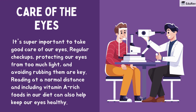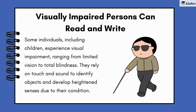As you can see, we can have serious issues with our eyes, so it's super important to take good care of them. Regular checkups, protecting our eyes from too much light, and avoiding rubbing them are key. Reading at a normal distance and including vitamin A rich foods in our diet can also help keep our eyes healthy. Some individuals, including children, experience visual impairment ranging from limited vision to total blindness. They rely on touch and sound to identify objects and develop heightened senses. Because of this, the Braille system was created.